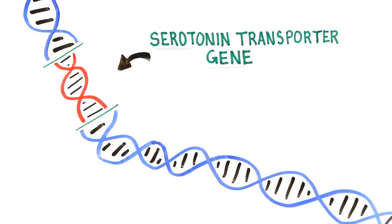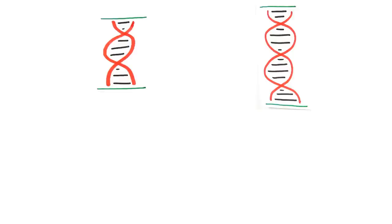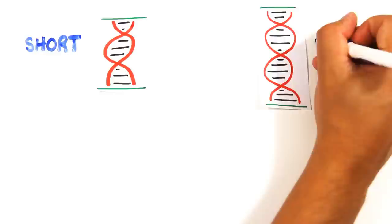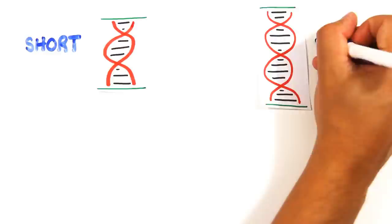One particular study found that a variation in the serotonin transporter gene leaves individuals more vulnerable to depression. Every individual has two copies of the gene, one from each parent, and this gene can either be short or long.